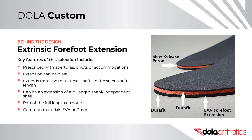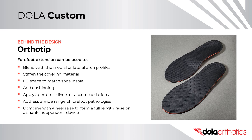An extrinsic forefoot extension can be prescribed with apertures, divots, or accommodations, or left plain. It extends from the metatarsal shafts to the sulcus or full length. It can be added as an extension to a three-quarter length shank-independent shell or as part of a full-length EVA orthotic shell. It is commonly made from EVA or Poron. Ortho Tip – A forefoot extension can blend with the medial or lateral arch profiles, stiffen the covering material, fill space to match a shoe or insole, add cushioning, apply apertures or divots, address a wide range of forefoot pathologies, or be combined with a heel raise to form a full-length raise on a shank-independent device.